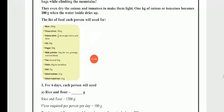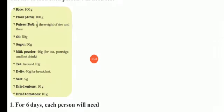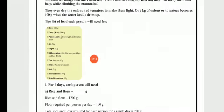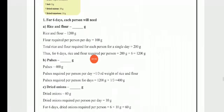The list of food each person will need per day is: Rice 100 grams, Flour 100 grams, Pulses — 1 third of the weight of rice and flour, Oil 50 grams, Sugar 50 grams, Milk powder 40 grams, Tea around 10 grams, Dahlia 40 grams, Salt 5 grams, Dried onions 10 grams, and Dried tomatoes 10 grams.